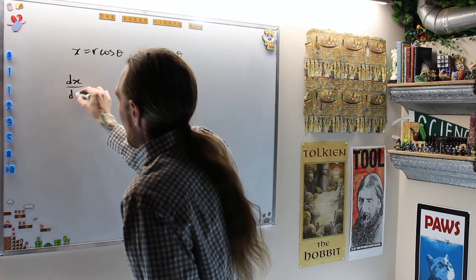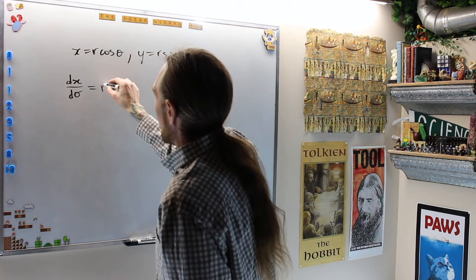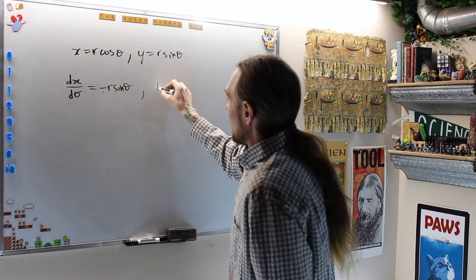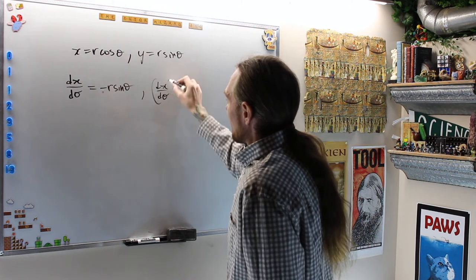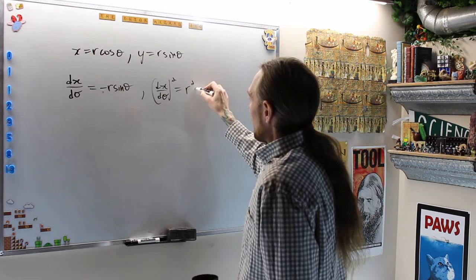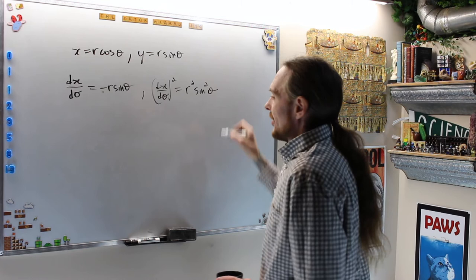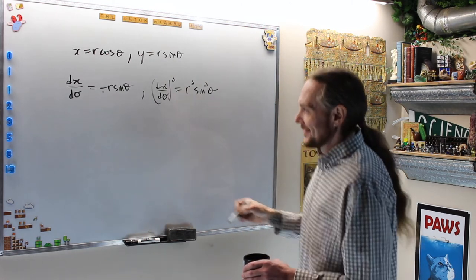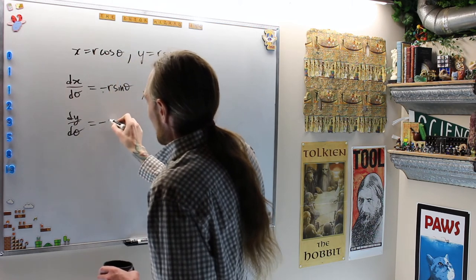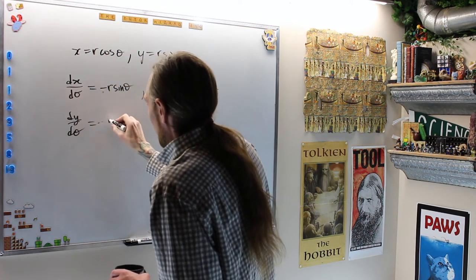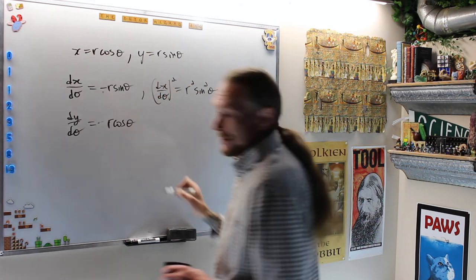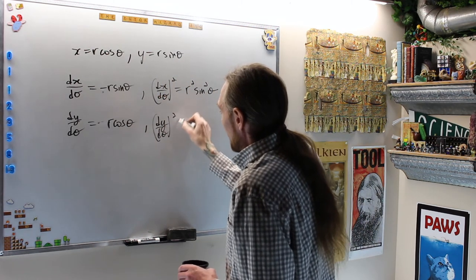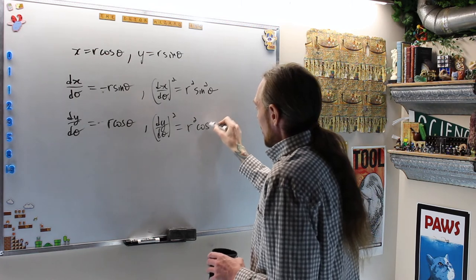Therefore, what is dx/dθ? This is negative r sin θ. So (dx/dθ)² is r² sin² θ. Oh, I can just see the Pythagorean identity appearing already. dy/dθ is equal to, not negative, no, this one's positive, r cos θ. So (dy/dθ)² is r² cos² θ.